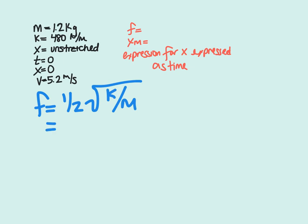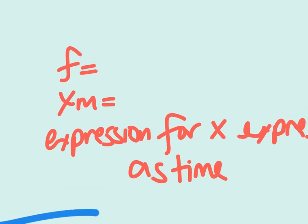Plugging in our values, we have one half the square root of 480 newtons per meter divided by 1.2 kilograms, which gives us the frequency of 3.2 hertz.